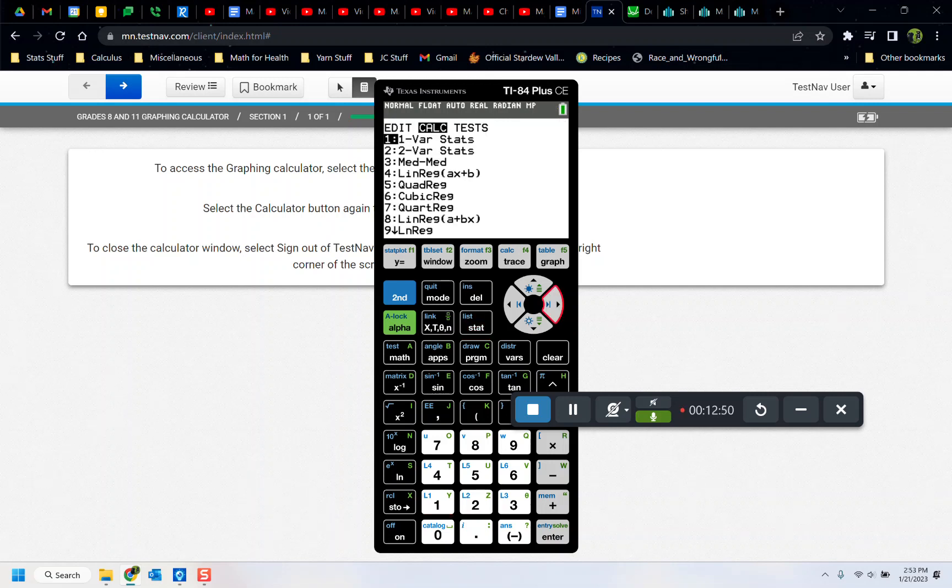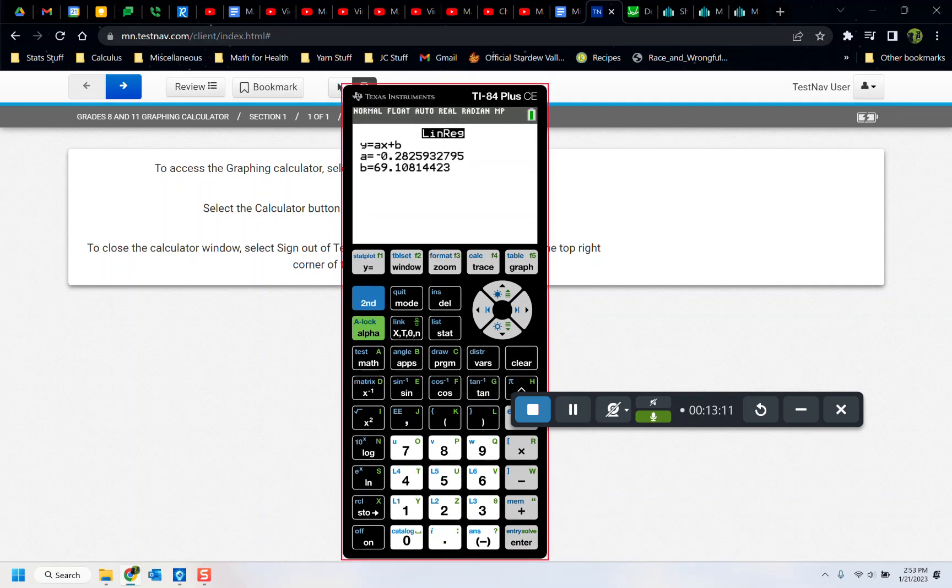Then stat, calculate, number four, linear regression. So if you just hit the number four on your keypad, it'll take you there. You want whatever columns you have your data in, which I had L1 and L2, that's list one and list two. And then I go down to calculate and press enter, and there it is. Now you'll notice my correlation coefficient is missing because this is a web tool, so it disappears every time.